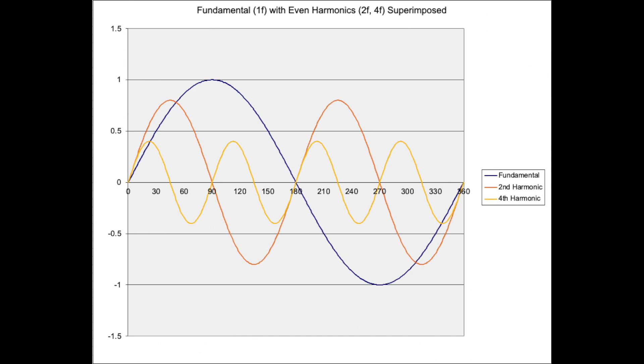Harmonics can be considered as the frequencies that make up a complex waveform, and in the cases we'll cover in this video, they occur at frequencies that are multiples of the fundamental frequency. In other words, they occur at twice, three times, four times, the fundamental frequency, and so on.